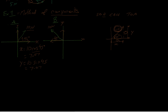Now let's find the x and y components of force B. The x will go the opposite direction: x = 10 cos 45 = 7.07, and y = 10 sin 45 = 7.07. They're all in newtons.